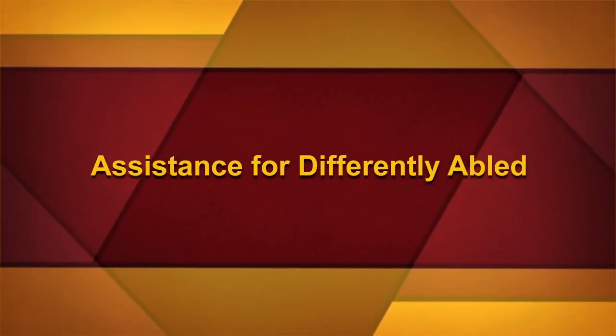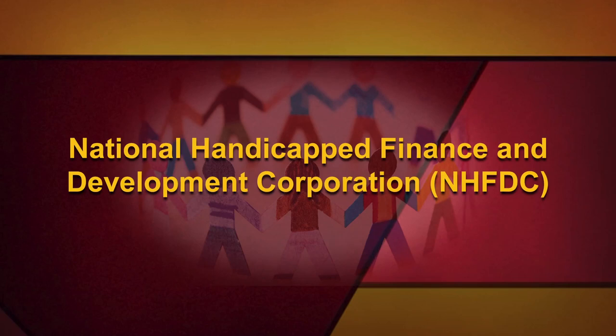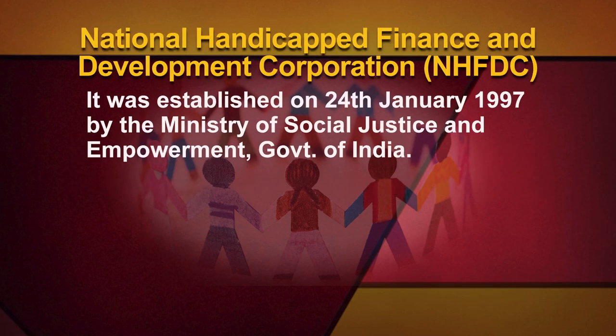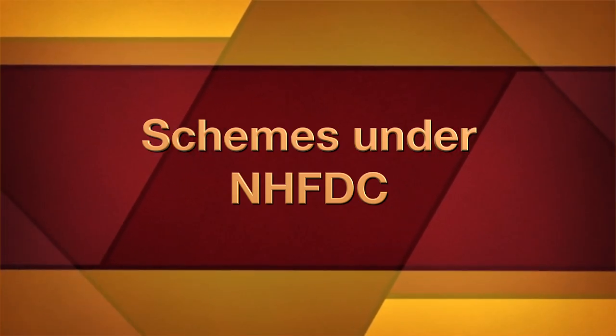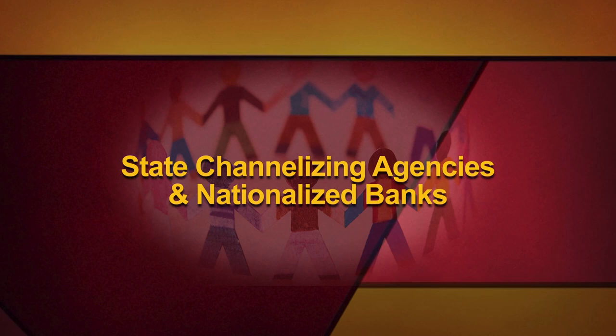Assistance for Differently Abled — National Handicapped Finance and Development Corporation (NHFDC). It was established on 24 January 1997 by the Ministry of Social Justice and Empowerment, Government of India. It is an APEX institution for channelizing funds to persons with disabilities through state channelizing agencies nominated by the state government. Schemes are implemented through state channelizing agencies and nationalized banks.